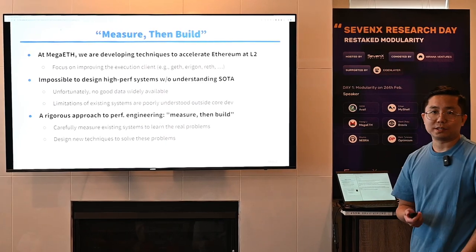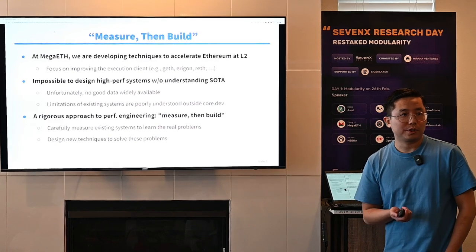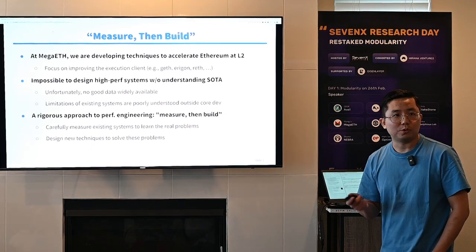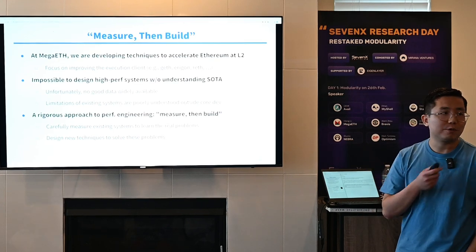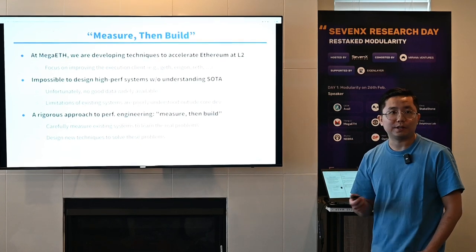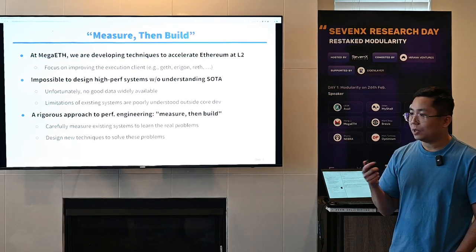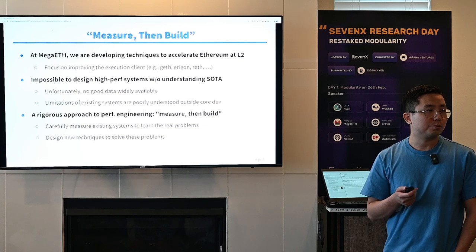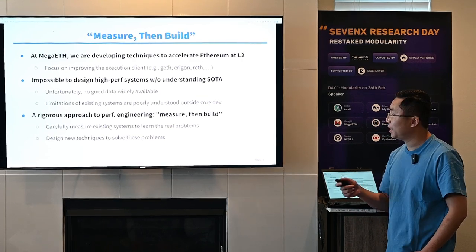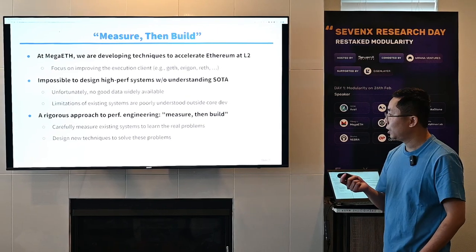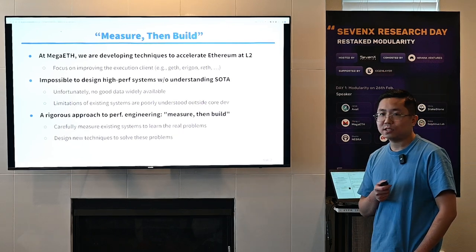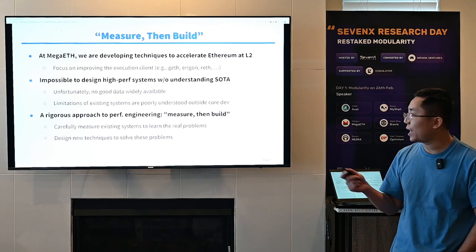At MegaEth, we're working on techniques to accelerate Ethereum at layer two. Most of our work focuses on improving the execution client — that would be Geth, Erigon, or Reth. Unfortunately, it would be impossible to design truly high-performance systems without first understanding the state of the art. We couldn't find any good up-to-date performance data, which also explains why the limitations of existing systems are poorly understood outside the core dev team. So we decided to take a rigorous approach from the very beginning: measure and build. There are basically two steps — first, carry out a very deep performance measurement of existing systems to learn the real problems, and then design new techniques to actually address those problems.